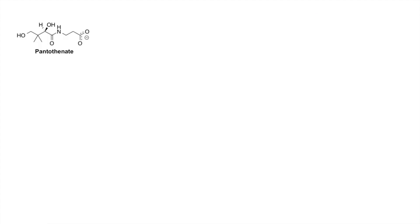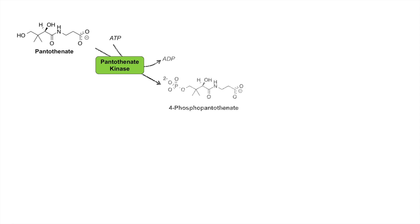It all starts with pantothenate. We get pantothenate from our diet — those dietary sources we talked about in the last slide. Pantothenate gets acted on by the enzyme pantothenate kinase. It's a kinase, which means that it phosphorylates pantothenate. That phospho group comes from ATP, and is added onto pantothenate to give us 4-phosphopantothenate, with ADP as the byproduct. You can see here that this is the phospho group that's been added.